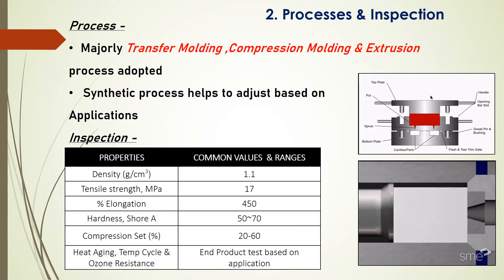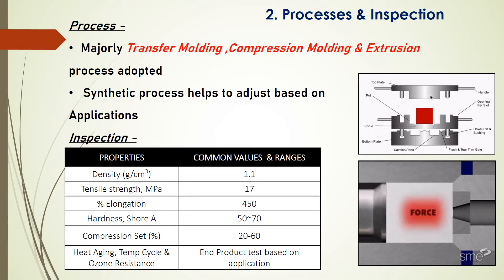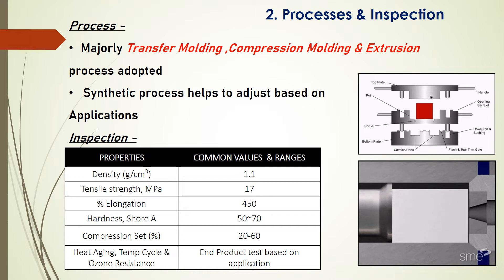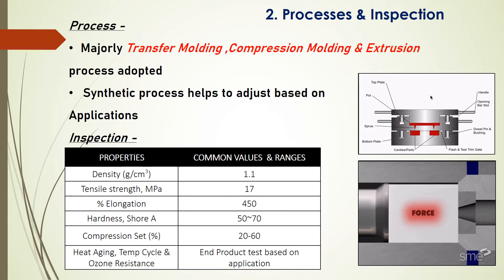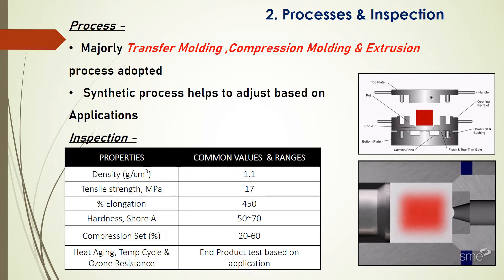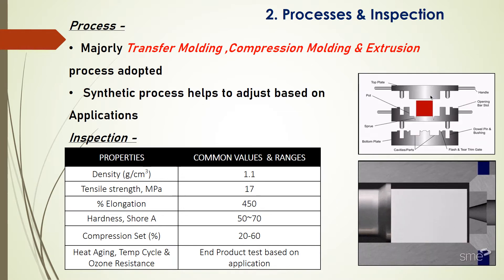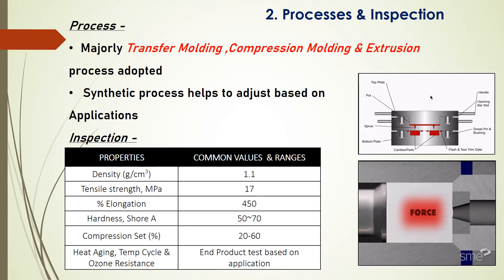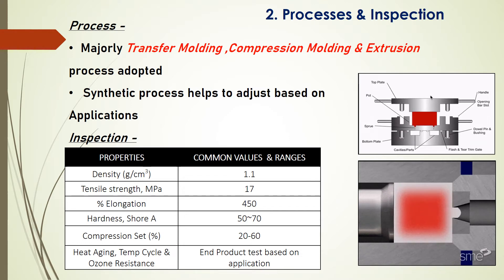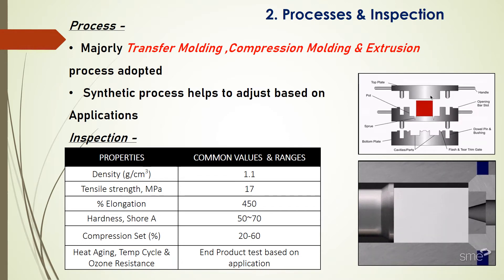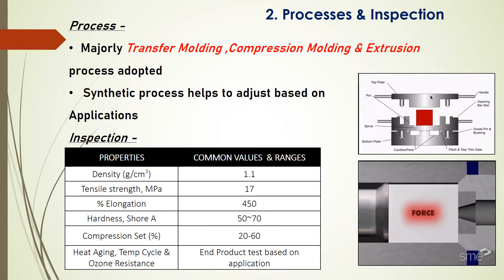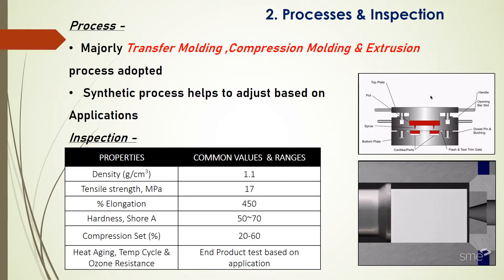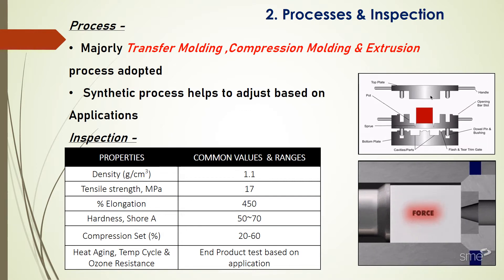EPDM rubber is processed in multiple ways to get a final product. Majorly, transfer molding, compression molding, and extrusion processes are adapted. You can see the right-side image to understand the processes. In transfer molding, preheated material is transferred to a mold to get a final shape. In compression molding, preheated material is placed into the mold with a compression force. In extrusion, preheated material is forcefully passed through a nozzle to get the final shape.